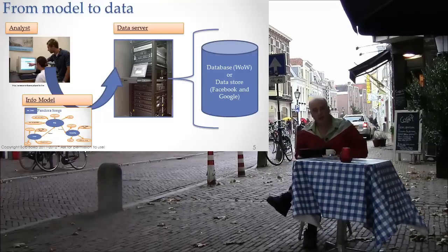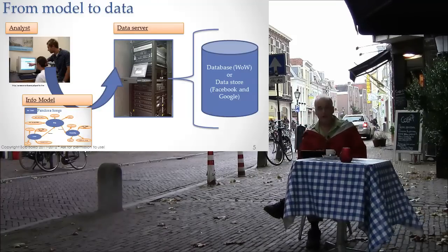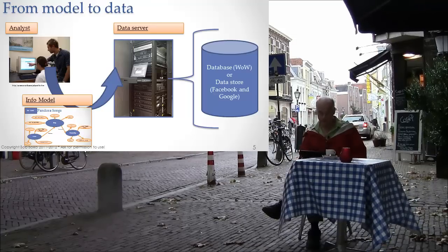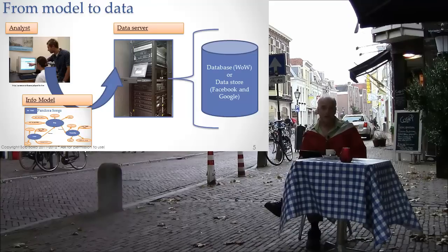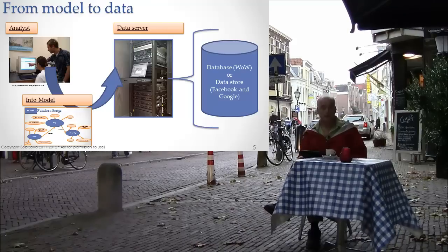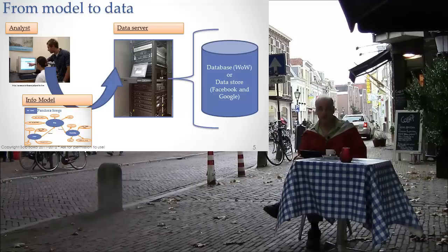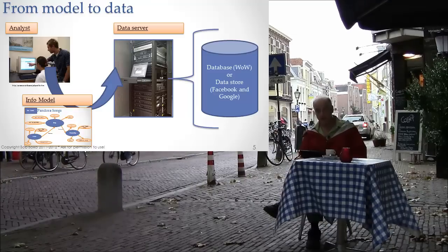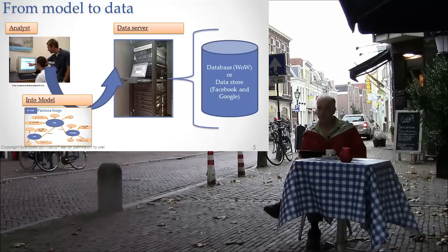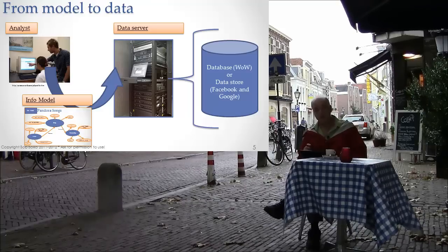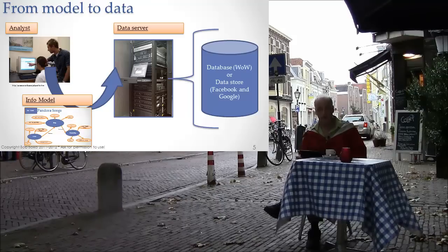How does information move from a model to the database? It goes from the information model into the database. There are analysts responsible for creating the information model, and that model is passed from analysts to database architects — though that could be the same people, they are different functions. The analyst understands what kinds of information we need to manage in this system but doesn't necessarily know how to put it in the database. The database architect understands very well how to put information into the database, but may not know what information is needed. So the analyst produces the nicely organized, well-specified model and passes it to the data architect, who figures out what the tables should be to best represent it.